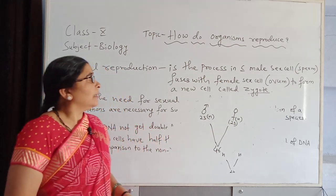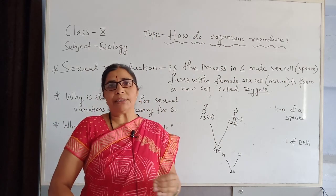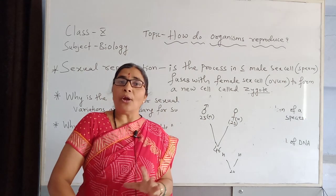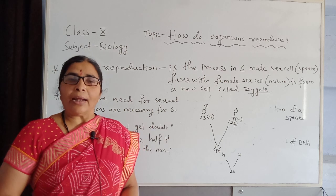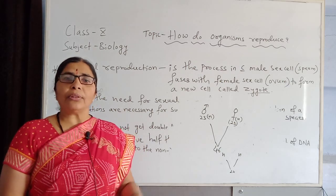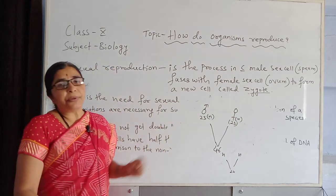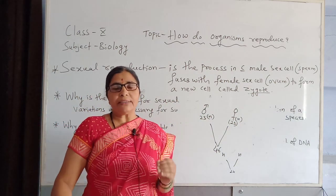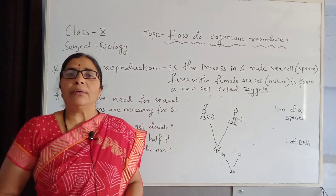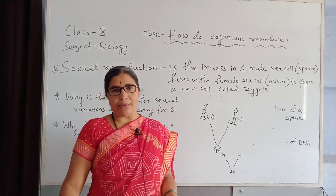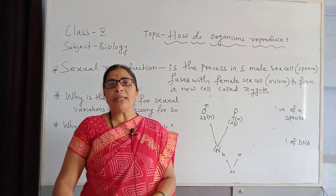For fertilization and zygote formation, food and movement are very important factors. The female germ cell is bigger in size and non-motile — it does not move from place to place — but it stores food, which is provided to the growing zygote. On the other hand, the male sex cell, the sperm, is very small in size, does not store food, but is motile in nature — it moves from place to place to form a zygote. In the next session we will learn about sexual reproduction in flowering plants, and afterwards in humans.